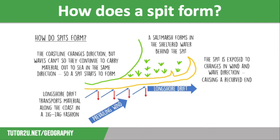Spits form when there is a change in the shape of the coastline. Waves can't change direction here, so they continue to carry the sediment and deposit it in the same direction as the original coastline. And as a result, a spit starts to form.